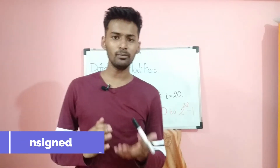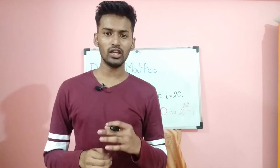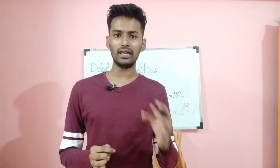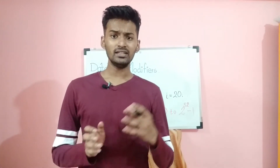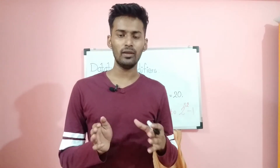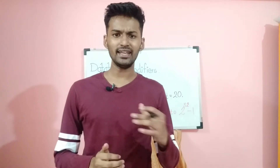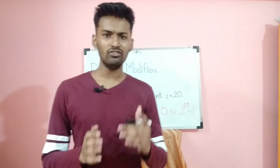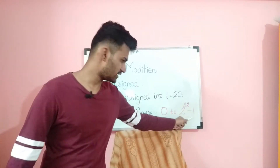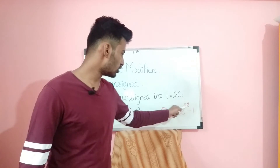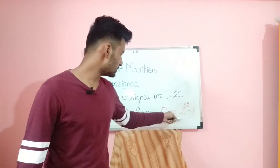The next data type modifier is unsigned. Unsigned is similar to signed in that it does not change the size of the variable, but it changes the range. For example, if we need to find the square of any number, the square is always positive — the square of 5 is 25, and the square of minus 5 is also 25. Using a signed integer, half the range (minus 2 raised to 31 to minus 1) would be wasted. With unsigned int, the range becomes 0 to 2 raised to 32 minus 1.